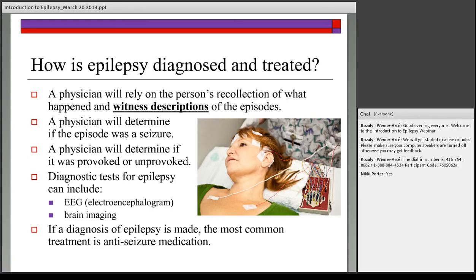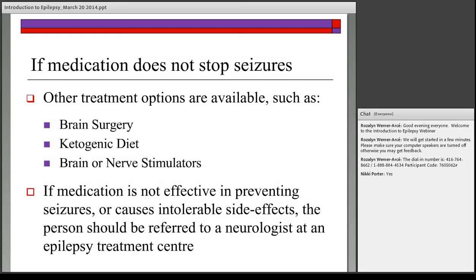If a diagnosis of epilepsy is made, the most common treatment is anti-seizure medication. If medication does not stop seizures, other treatment options include brain surgery, dietary treatments such as the ketogenic diet, and brain or nerve stimulators. If medication is ineffective or causes intolerable side effects, the person should be referred to a neurologist who specializes in epilepsy to explore other options.